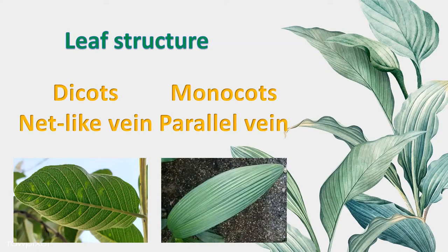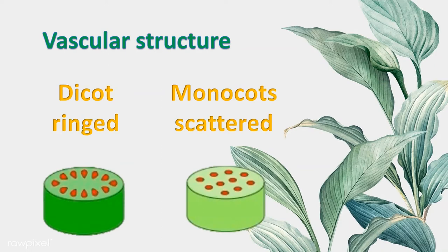The dicot has net-like veins, while the monocot has parallel veins for the leaf structure, as shown in the picture. The vascular bundles, which bring materials around the plant: the dicot is ring-scattered, while the monocot is scattered around the stem.